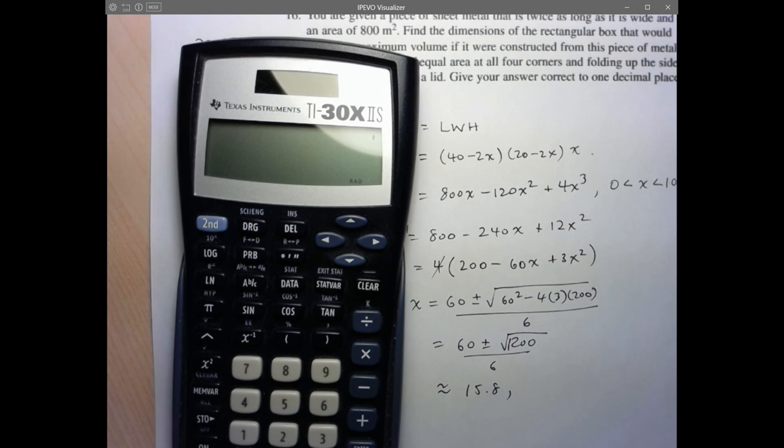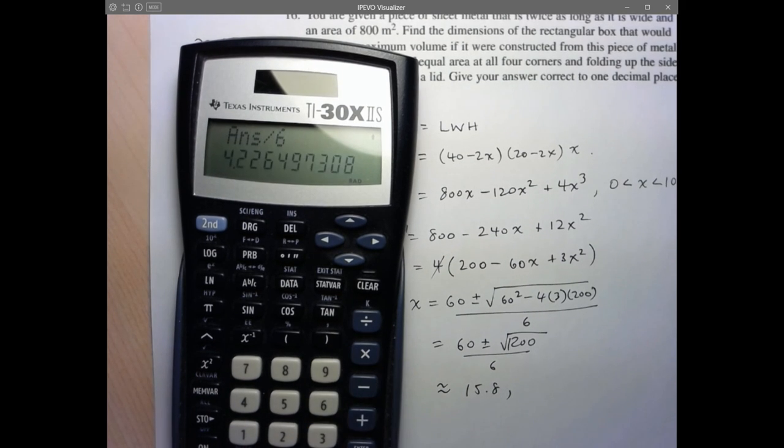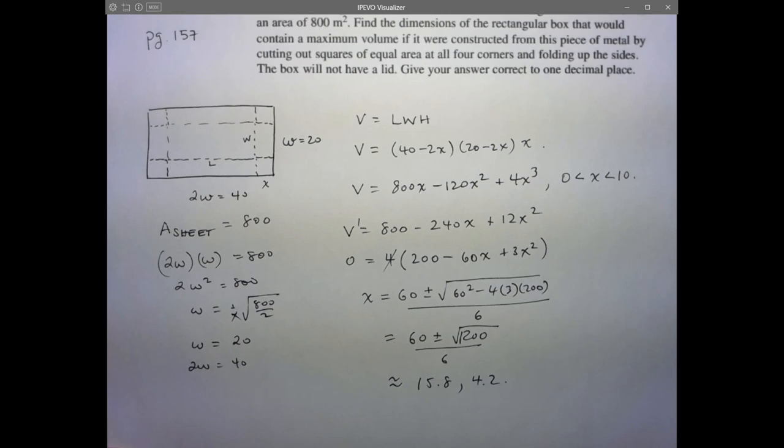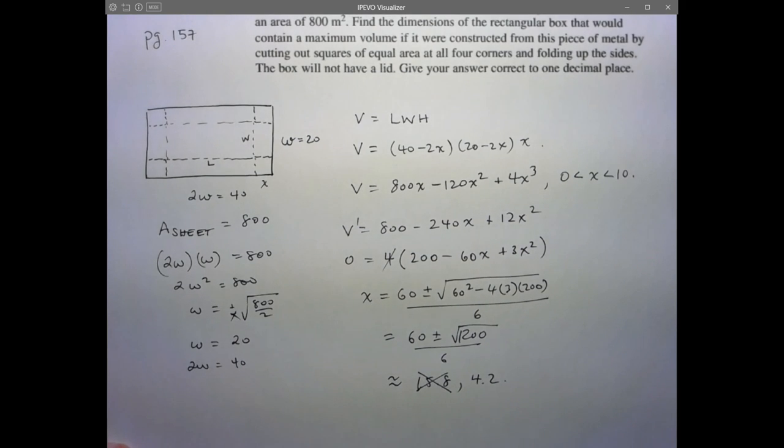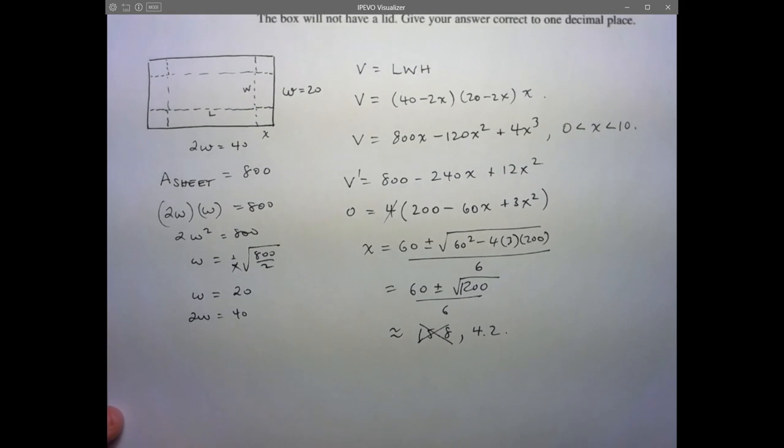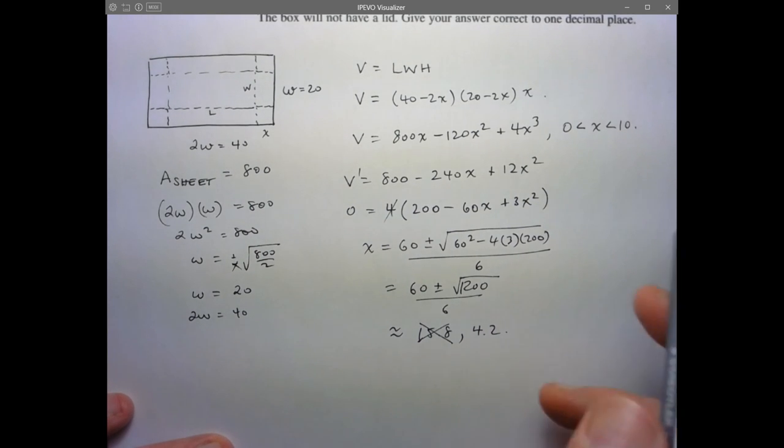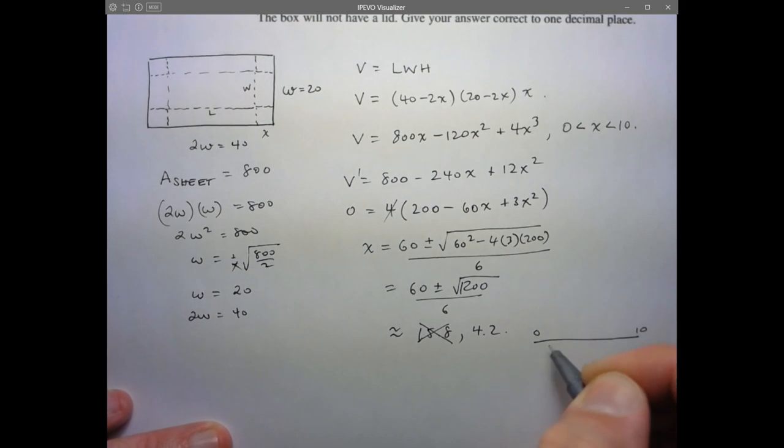Let's do 60 plus square root of 1200 and then divide by 6. And that gives us 15.8. And then let's see if the other one gives me a positive answer. 60 minus the square root of 1200 divided by 6 gives me 4.2. So we've got two possible answers, both positive. But this is where I realized that 15.8 is not going to be in my domain. So we'll eliminate that one there. So this is my only critical point in that open interval.